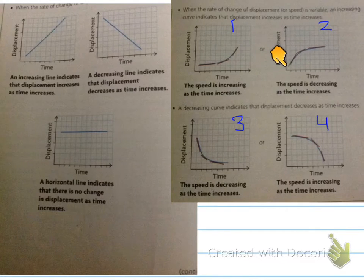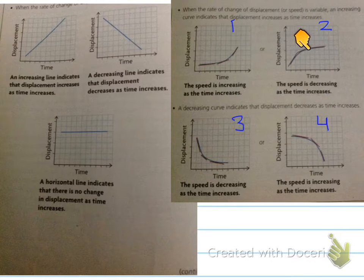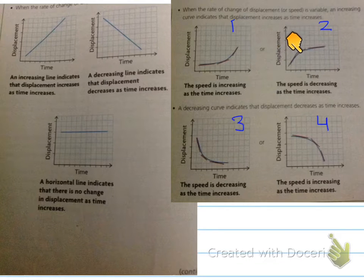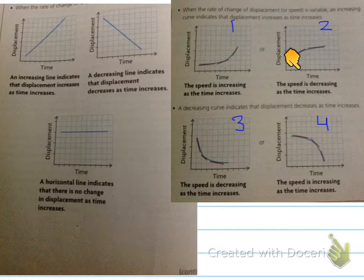Looking at this next curve, notice all of these tangent lines — the tangent line is becoming more and more horizontal, meaning the slopes of these tangents are getting closer and closer to zero. So the slope is going down, and because of that, the speed is decreasing because the slopes of the tangent are going downwards.